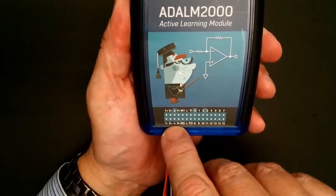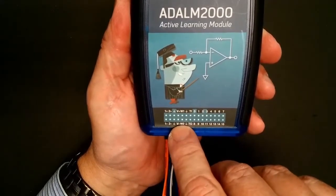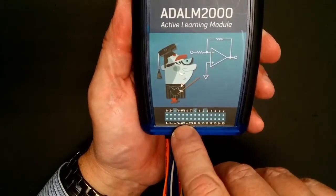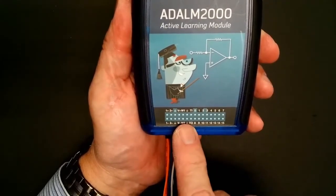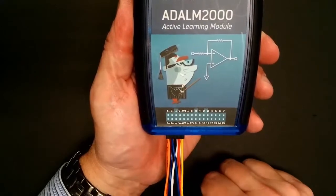The ground symbol, V plus and V minus are the respective power supplies. W1, W2 are wave generators 1 and 2, and the rest is another set of grounds and the rest is dealing with the digital. That will be explained later in another video.